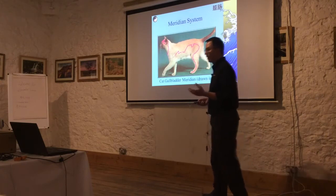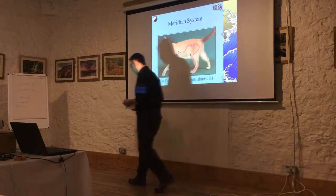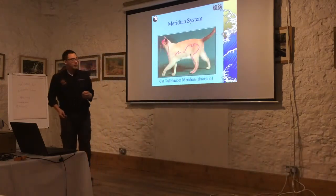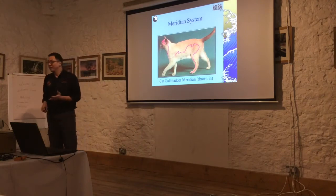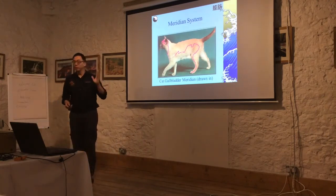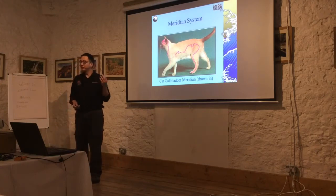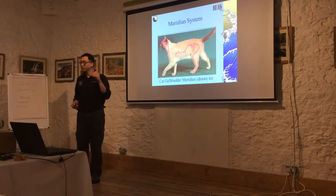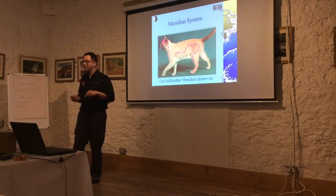For example, this is a meridian system for a cat's bladder that is drawn in. You can see that it has nothing seemingly to do with your bladder. It's just drawn in a line that supposedly has a specific arrangement, but as mentioned before, the neuroelectric potential does show a difference, demonstrating that this line actually does exist.